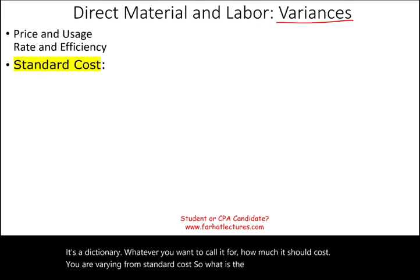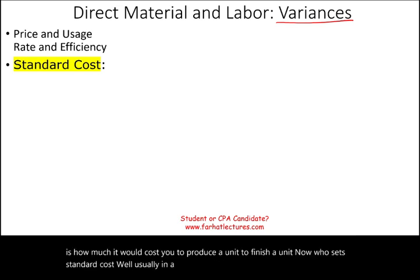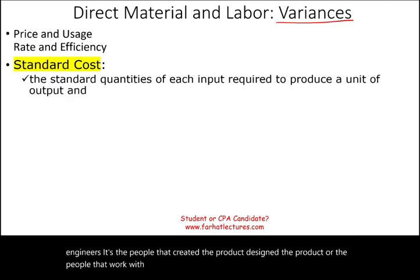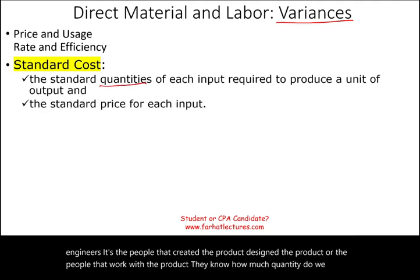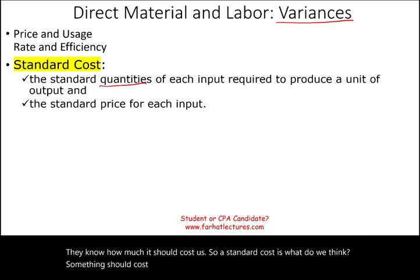So what is a standard cost? Standard cost is how much it would cost you to produce a unit, to finish a unit. Usually in a manufacturing company, it's the industrial engineers — the people that created or designed the product, or the people that work with the product. They know how much quantity we need and how much it should cost. Standard cost is what we think something should cost us.